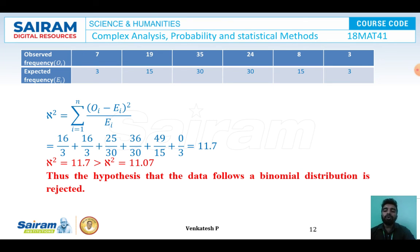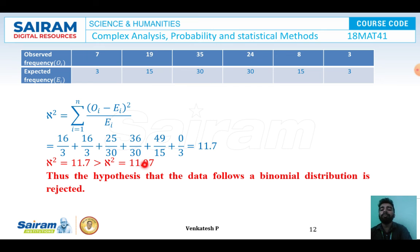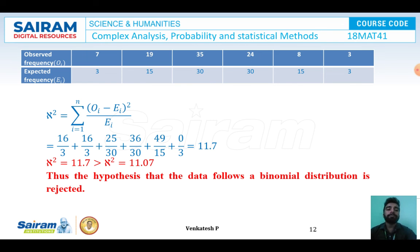Chi-square equals summation of (O_i minus E_i)^2 / E_i. Substituting all values: 16/3 + 16/15 + 25/30 + 36/30 + 49/15 + 0/3 = 11.7. Since the calculated chi-square value of 11.7 is greater than the table value of 11.07, we conclude that the given data does not follow the binomial distribution and the hypothesis is rejected.